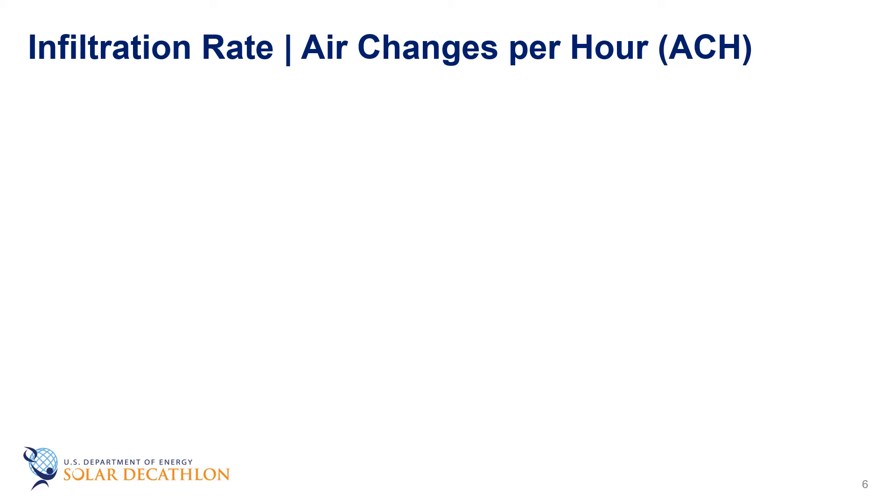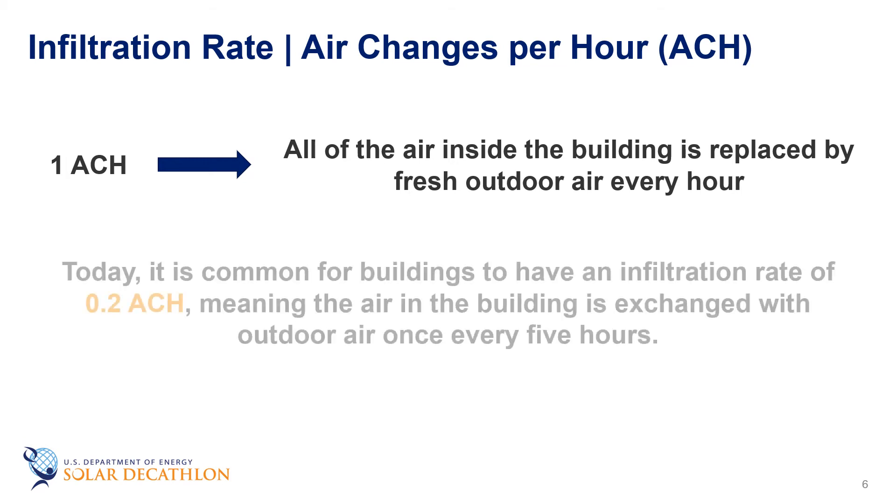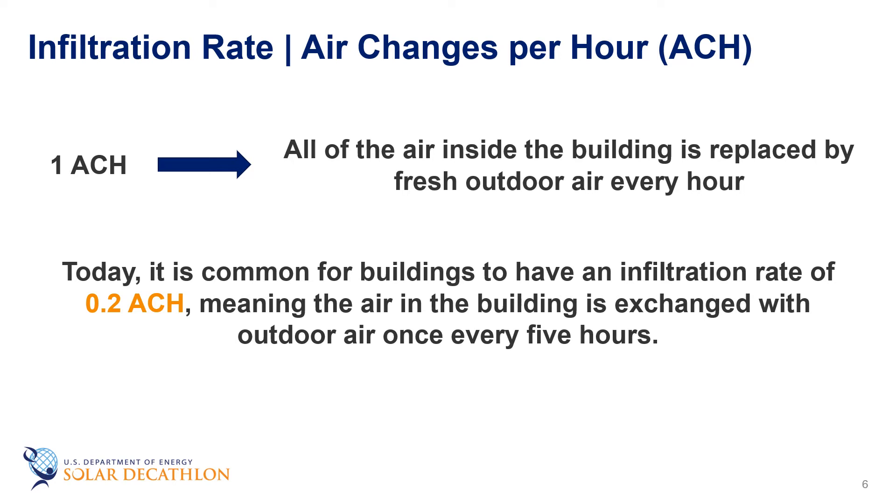For example, if we have one air change per hour, that means all of the air inside the building moves out of the building, and fresh air is added to the building every single hour. Today, that would be a fairly leaky building, but it wasn't that long ago where this was typical. Today, we often see buildings that are less than 0.2 air changes per hour, but even with that, that would mean that every five hours the air is completely exchanged from indoors to outdoors.